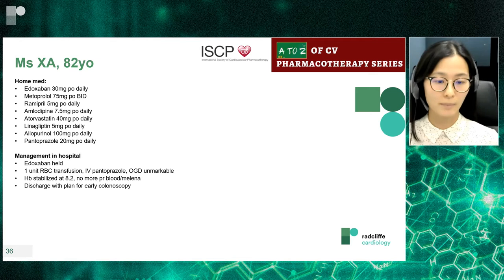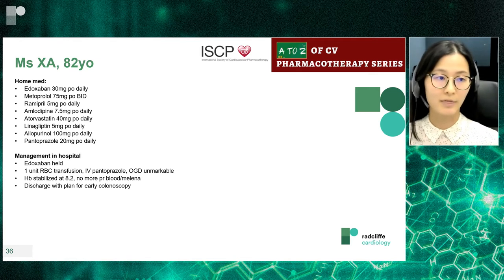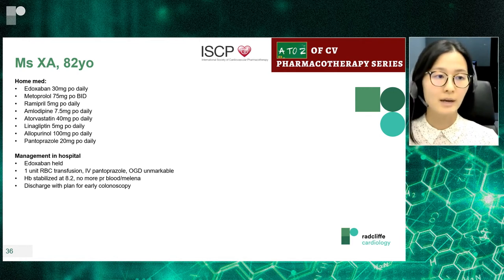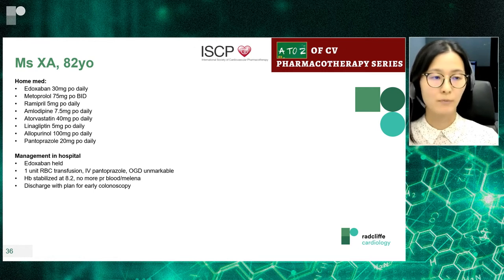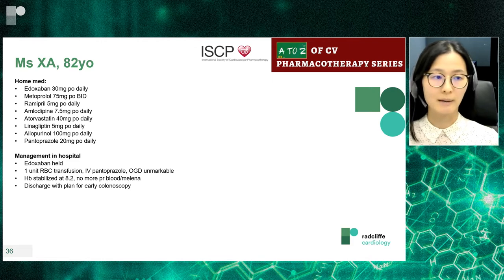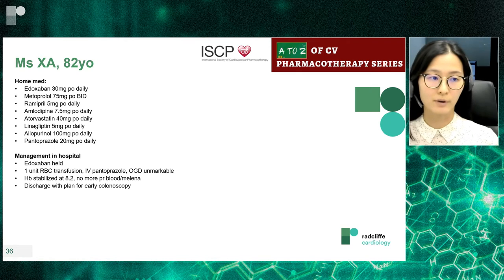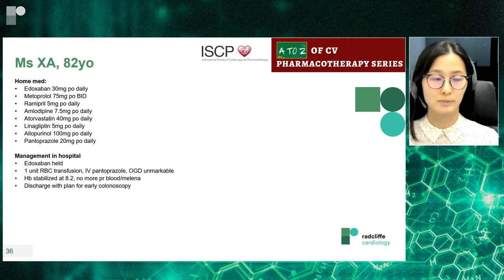Her home medications include edoxaban 30 mg PO daily (appropriately adjusted for renal function), metoprolol 75 mg BID for rate control, ramipril 5 mg daily for vascular protection, amlodipine 7.5 mg daily for hypertension, atorvastatin 40 mg daily post-MI, linagliptin for diabetes, allopurinol for gout, and pantoprazole 20 mg daily for gastroprotection.